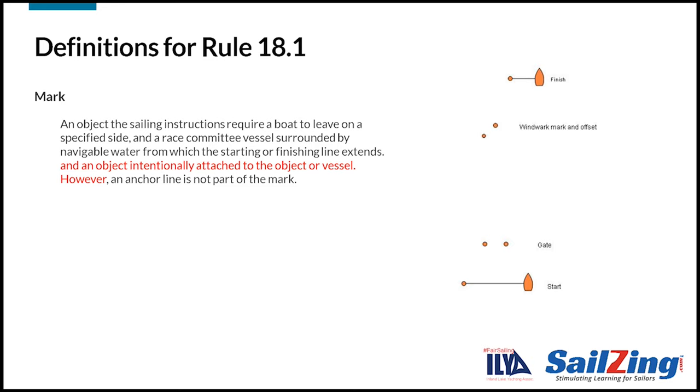Let's look at the definitions for Rule 18.1 that we haven't addressed in previous videos. Here's the definition of mark. Take a moment to read it. The course diagrams in the sailing instructions show the mark and the direction you must round the marks. Marks include objects such as buoys, race committee boats that form part of the start and finish line. Objects intentionally attached to marks are also part of the mark, except for the anchor lines. The picture shows examples of objects which are marks.